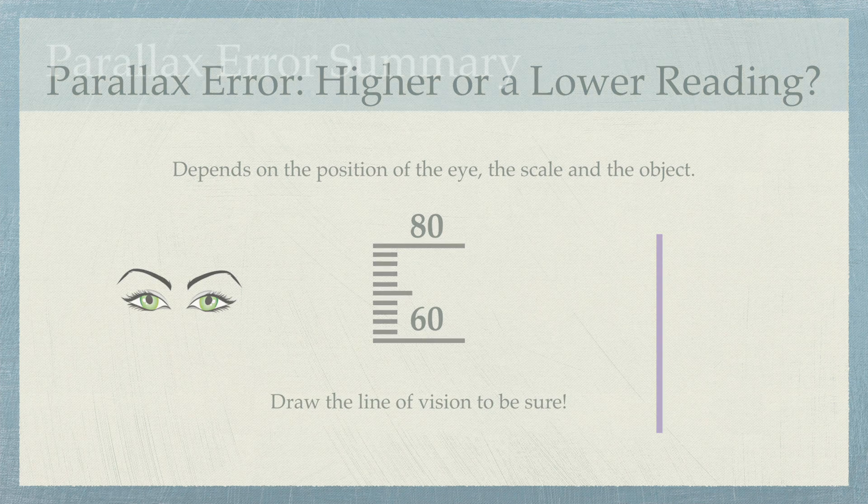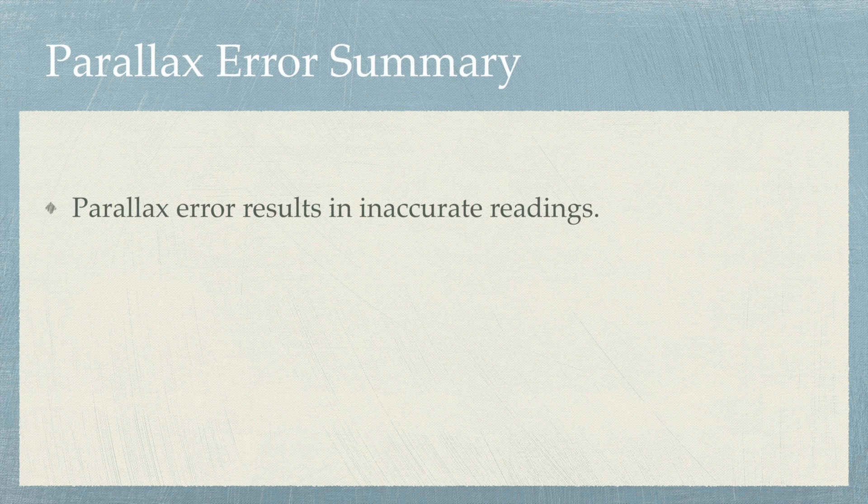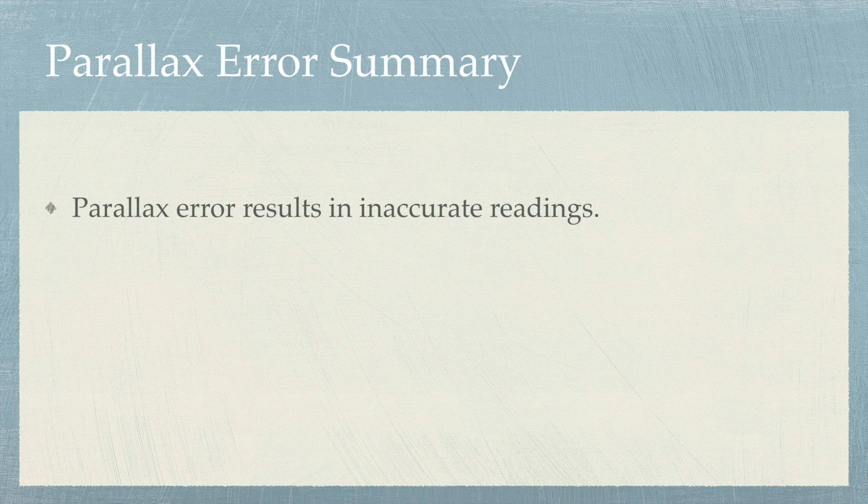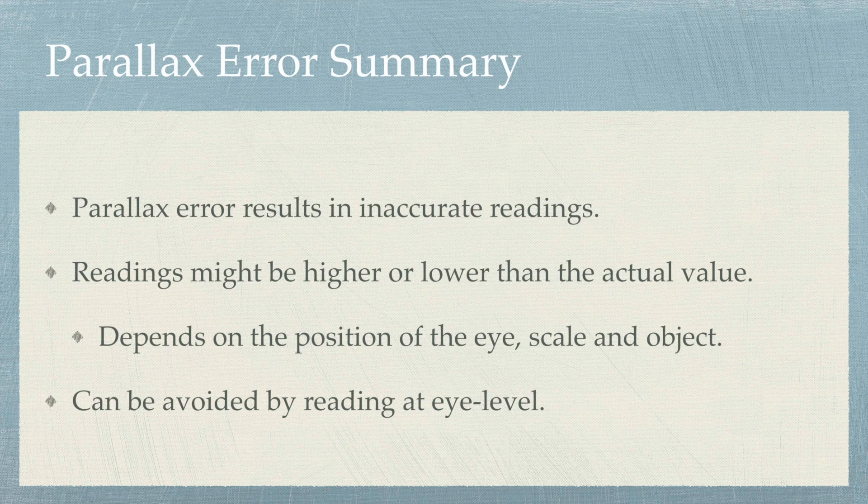That's it! Here's a summary about parallax error. Parallax errors result in inaccurate readings. Readings might be higher or lower than the actual value, and they depend on the position of the eye, the scale, and the object. However, parallax error can be easily avoided by reading at eye level.